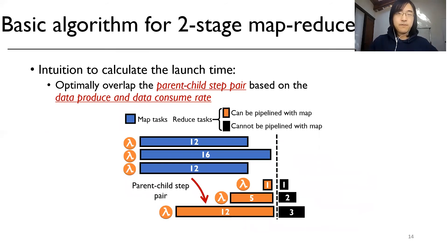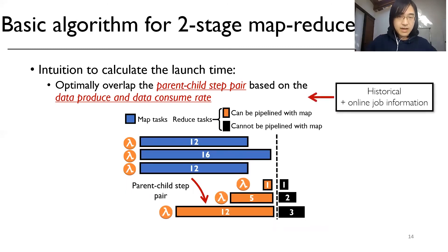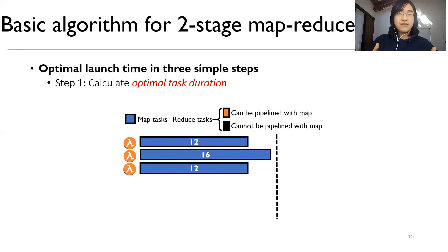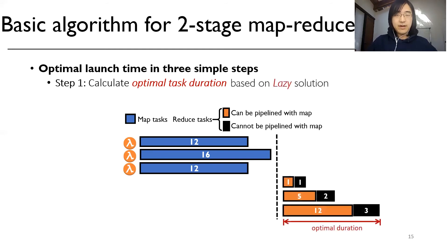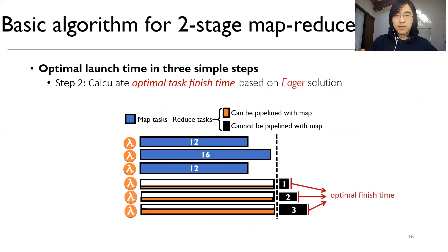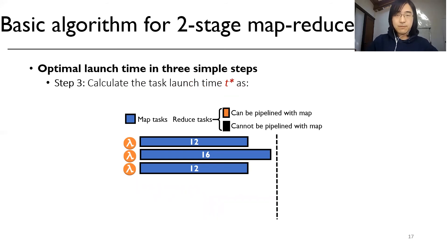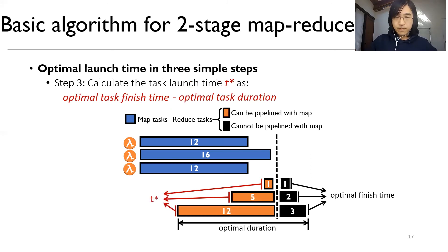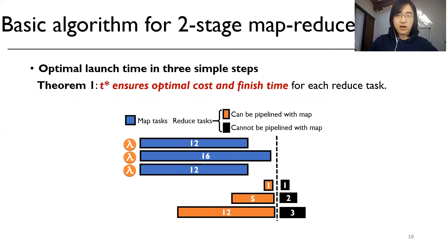Based on the step model, we start analysis from two-stage MapReduce jobs. The intuition for calculating launch time is to optimally overlap the parent-child step pair based on the data-produced and data-consumed rates, both of which can be estimated from historical and online job information. For map tasks, we launch them at time zero since they have no upstream dependencies. For reduce tasks, we calculate the optimal launch time in three steps: first, calculate the optimal task duration based on the lazy solution; second, calculate the optimal task finish time based on the eager solution; third, compute the launch time T* as optimal finish time minus optimal duration. We prove that T* ensures optimal cost and finish time for each reduce task.